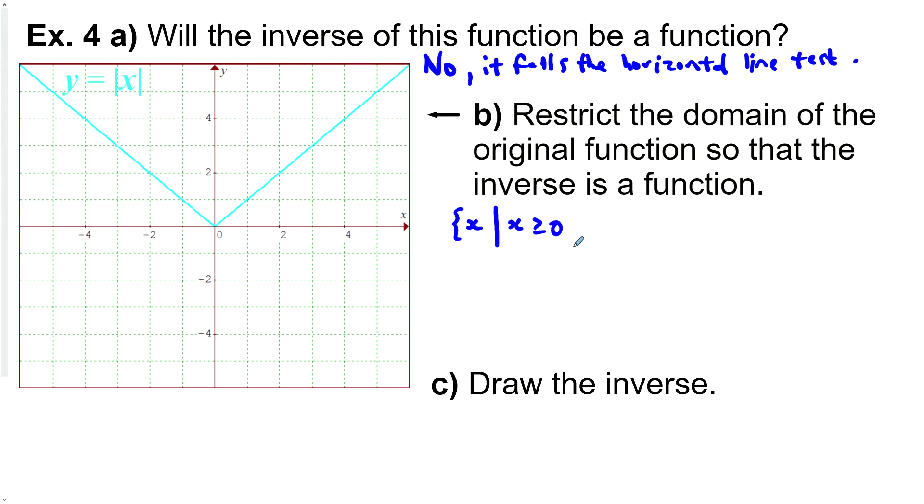We just need to cut it off either on the left or the right of the vertex would be the simplest. So I'll say x is greater than or equal to zero, and all real numbers would be fine. We could have also done x is such that x is less than or equal to zero, or x is less than or equal to negative one, less than or equal to negative two, less than or equal to negative 2.67 would all work.